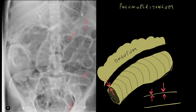In a patient with pneumoperitoneum, because the gas is now separating the omentum or bowel from the loop of bowel, you are able to see both sides of the bowel wall because of the silhouette sign. This is depicted on the abdominal radiograph here — you can see both sides of the bowel wall, and the bowel wall has a depth to it which it doesn't have in normal patients.